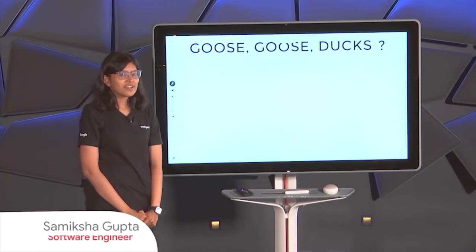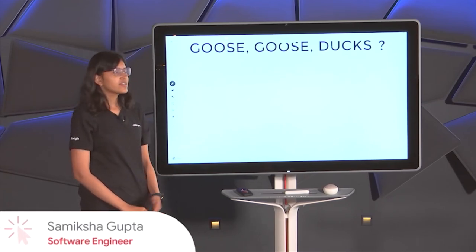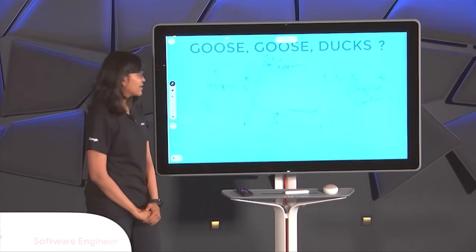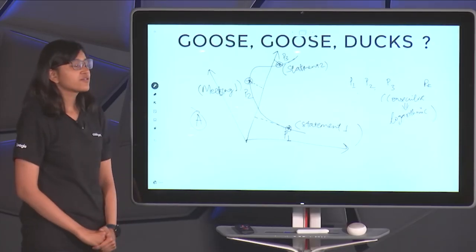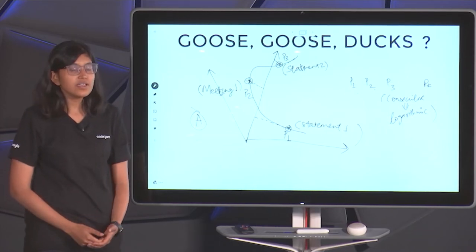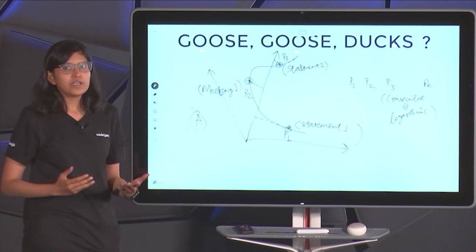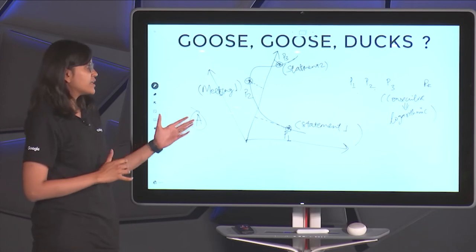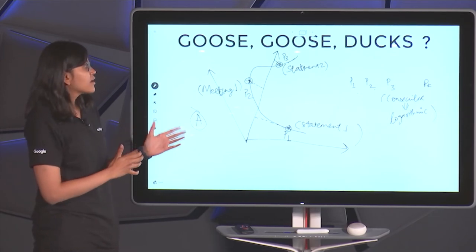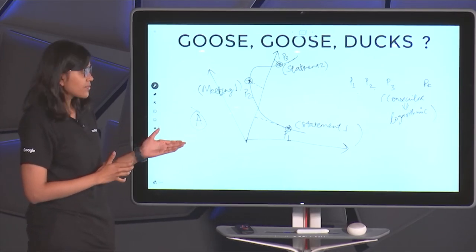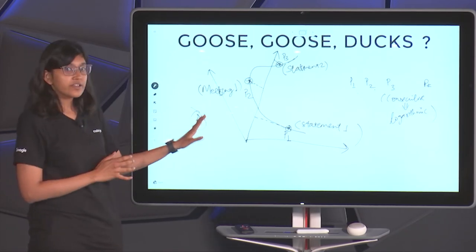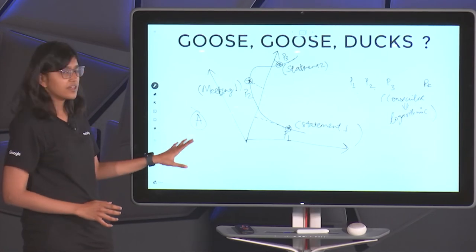Hey, I'm Samiksha. I'm from Kickstart team and I will walk you through the problem Goose Goose Ducks. The key in this problem is to carefully look out for all the rules of consistency and then derive implications from it. We have two main information which is given to us in the problem statement. First is set of meeting points for all the ducks that were present in the conference room. And second,